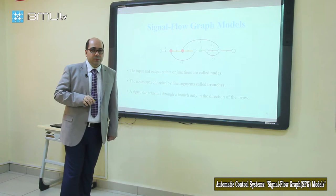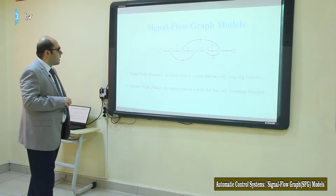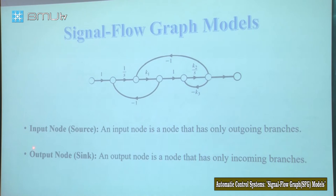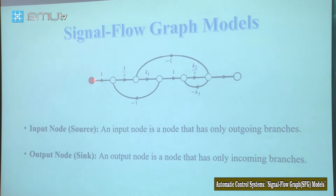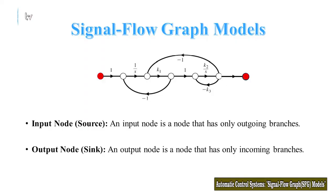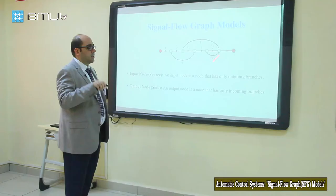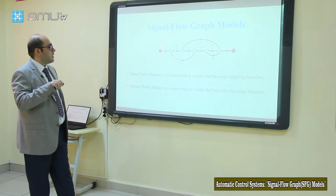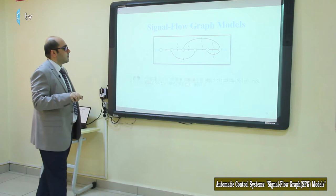So: nodes, branches, and direction of a signal flow graph. Another term is source or input node. An input node is a node that has only outgoing branches — this is our source or input node. An output node or sink is a node that has only incoming branches.